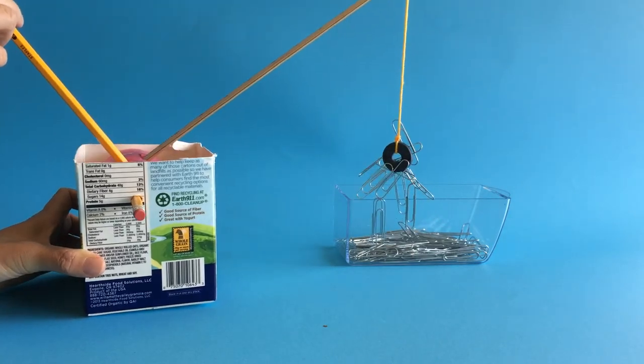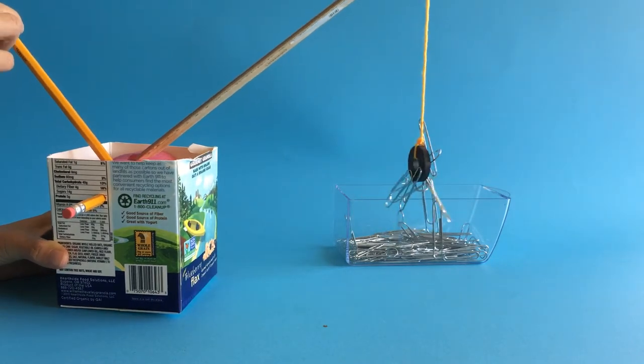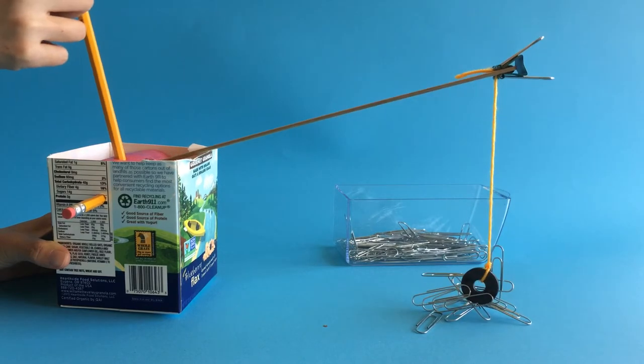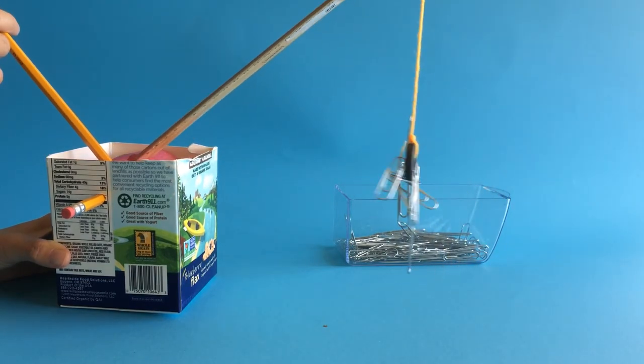We're going to use the lever to lift the weight arm, and then we're going to drop the load of paper clips right there. So there we go—a very similar model of a crane that uses the lever to lift objects.